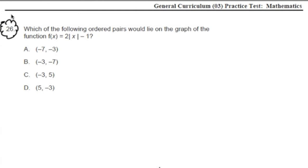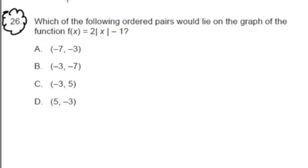I like this problem a lot. It's an intro to functions, a great problem for elementary and middle school teachers out there to check out. Let's start by reading it over. Here we go for number 26. It says, which of the following ordered pairs would lie on the graph of the function f(x) = 2|x| - 1?